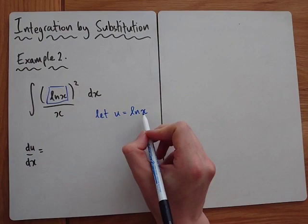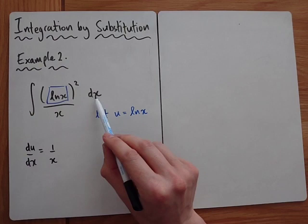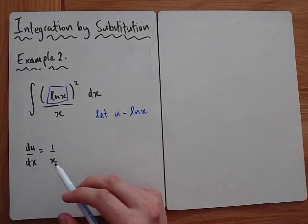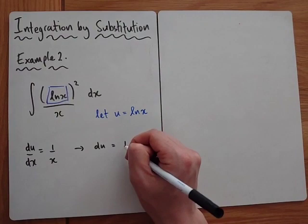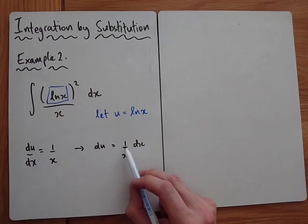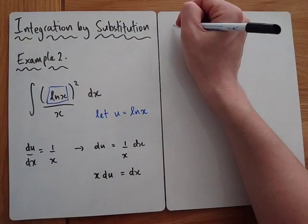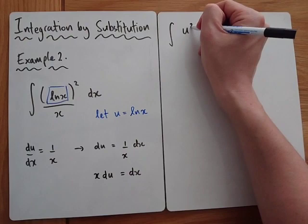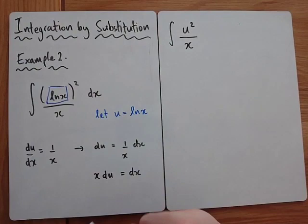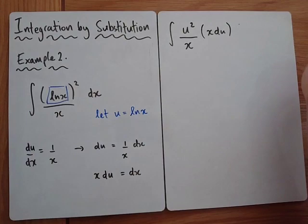If u equals ln x, when we differentiate we get du/dx equals 1/x. We need to replace dx, so rearranging: multiply both sides by dx to get du equals (1/x) dx, then multiply both sides by x to get x du equals dx. So now we know what dx is. Substituting into the integral: ln x becomes u, so we have u squared divided by x, multiplied by dx — which is x du.